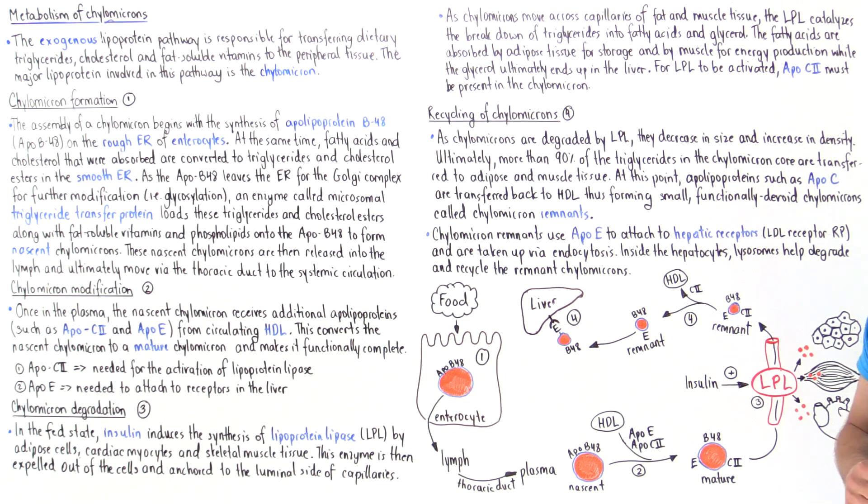Now these mature chylomicrons move into the capillaries of peripheral tissue. Specifically, they end up in the capillaries of adipose cells, skeletal muscle cells, and cardiac muscle cells.